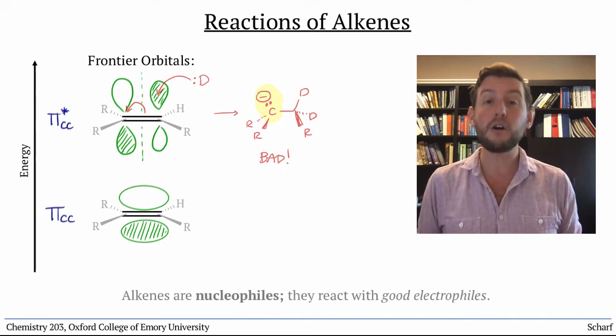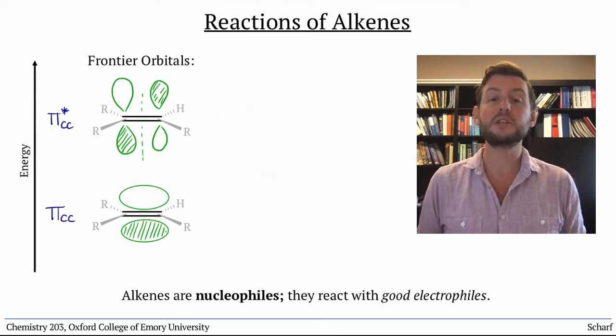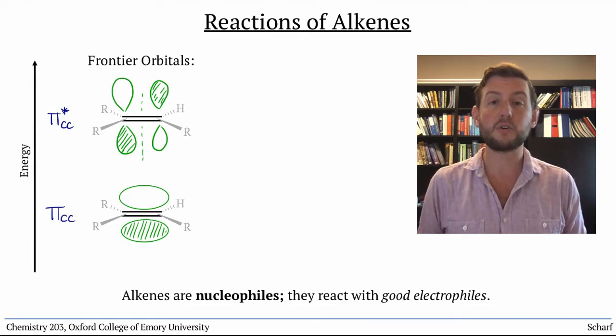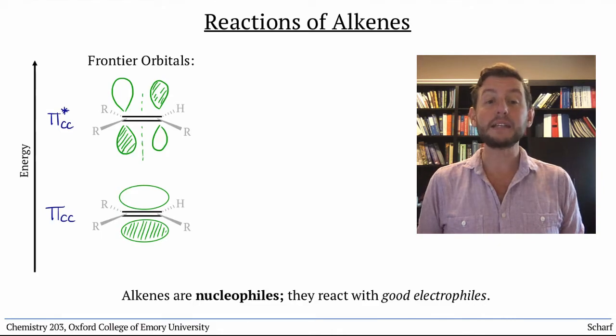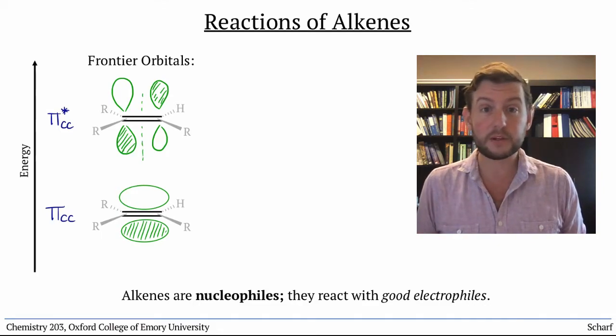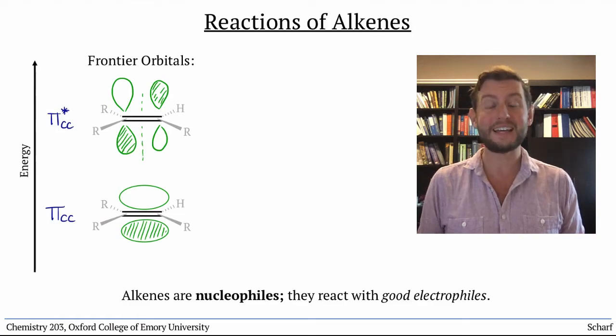Instead, they always act as nucleophiles. They use their pi cc as a donor orbital. This means that alkenes don't react with other nucleophiles, but they do react with good electrophiles.